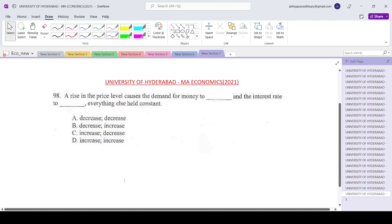Now coming to question number 98 of the paper. A rise in the price level causes the demand of money to dash and the interest rate to dash, everything else held constant.